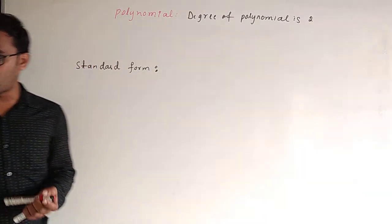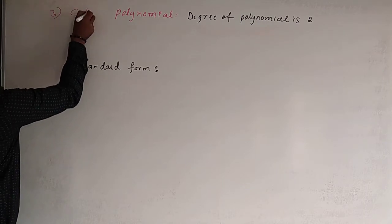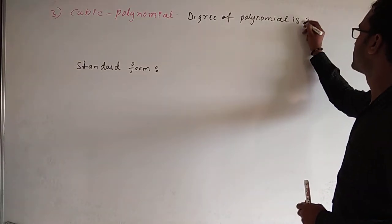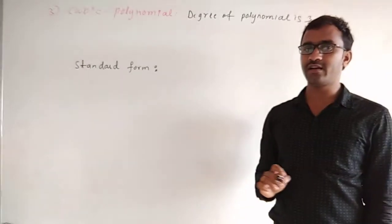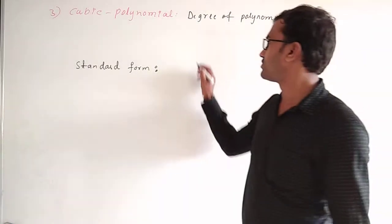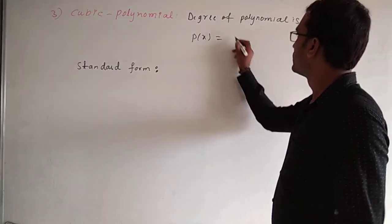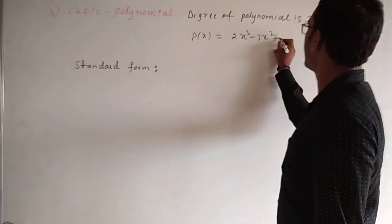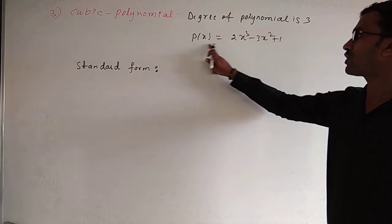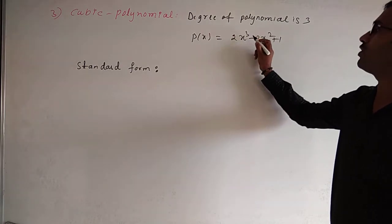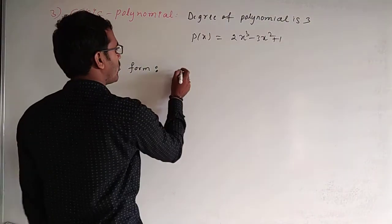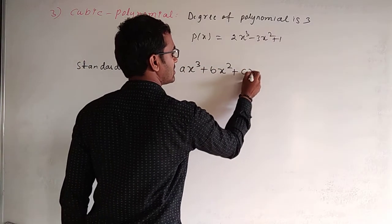The cubic polynomial is a polynomial whose degree is 3. Example: P(x) = 2x³ − 3x² + 1. The highest power of the variable is 3. The standard form of a cubic polynomial is ax³ + bx² + cx + d.